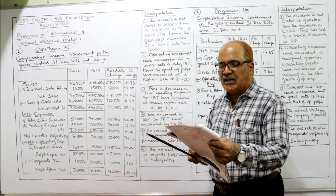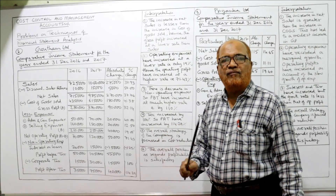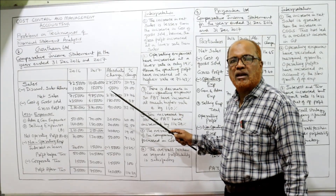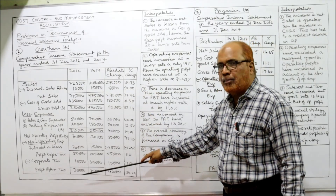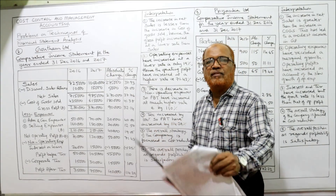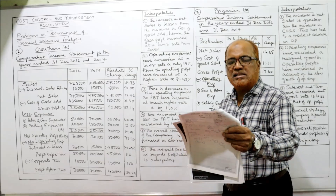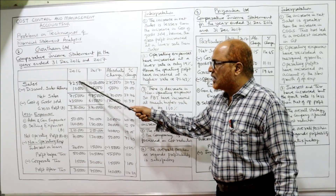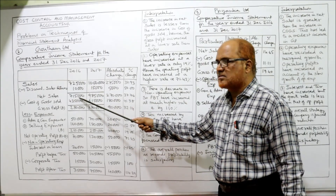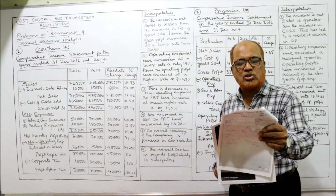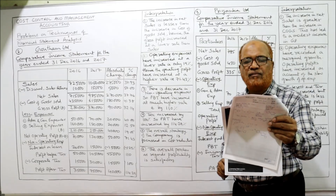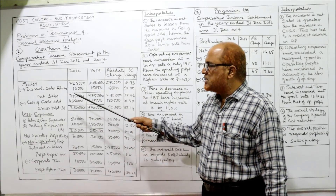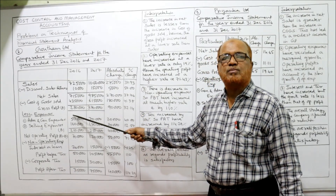First fill up the data in the first two columns — don't write anything in absolute change or percentage change yet, do those afterwards. Sales: last year 725, current year 10 lakh. Less discount and sales return: last year 10,000, current year 15,000. Deduct sales return from sales to get net sales, then deduct cost of goods sold — given as 435 and 615.